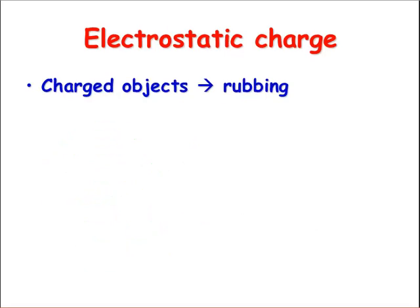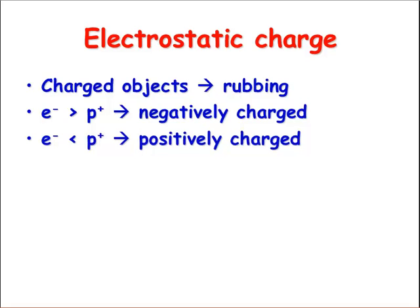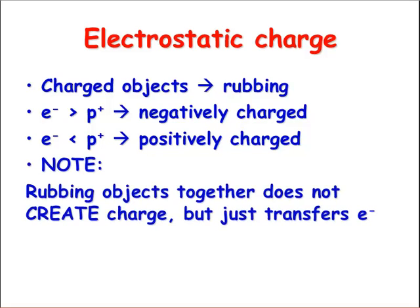Now we know that rubbing some objects together will cause them to become charged. For example, if you rub a balloon on your hair or on a woolen jumper, you can make it stick to a wall. But what's really going on? What's happening is either there's an excess of electrons and the object has become negatively charged, or we have an excess of protons where it's become positively charged. The rubbing process is not going to create any charge. What it is doing is transferring electrons. Either extra electrons are gained or electrons are given away.